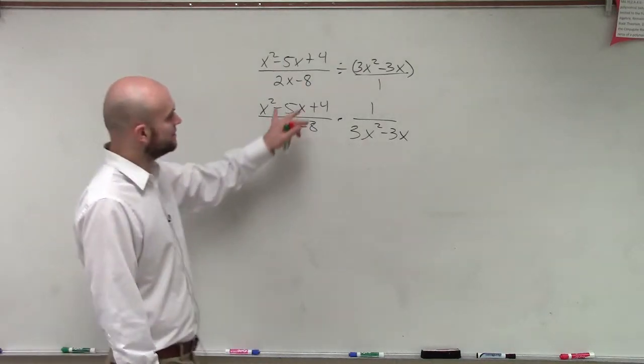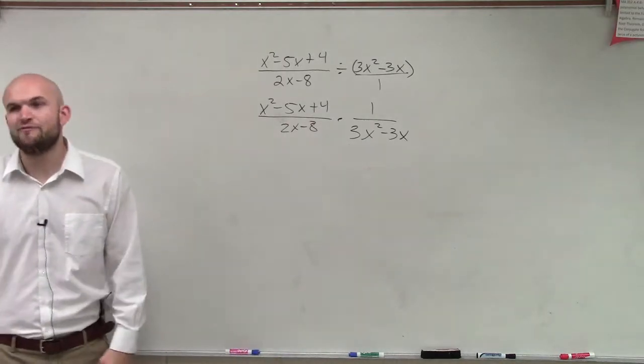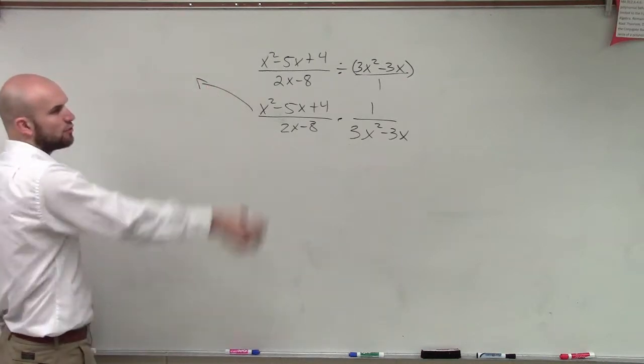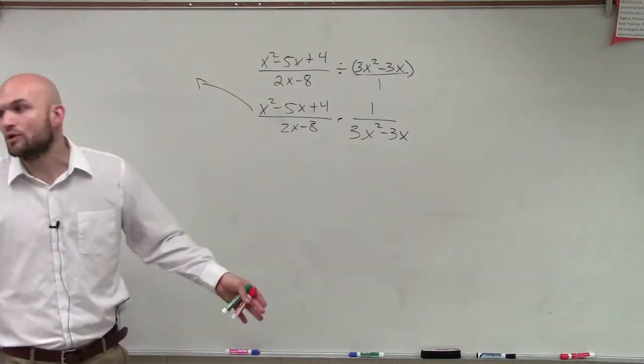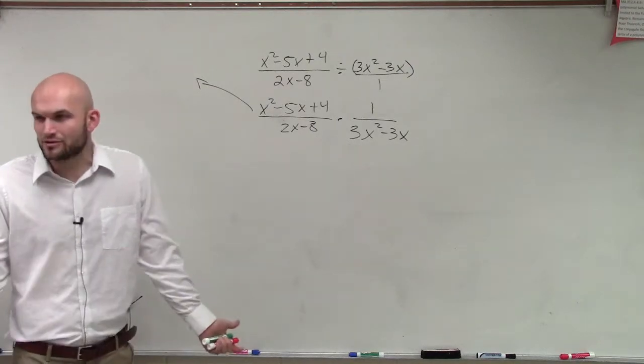So again, what I'm simply going to do is write out each one of these. Actually, for this problem, let's just see if we can factor them. I'm not going to write them in four quadrants like I did before. That's one way. You can also just say, all right, what's x squared minus 5x plus 4? Is that factorable?